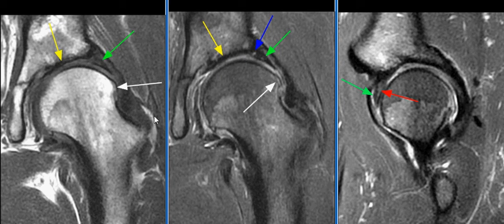The femoral head is aspherical, with apex spurring, compatible with femoroacetabular impingement in the setting of acetabular dysplasia.